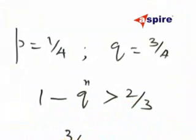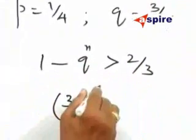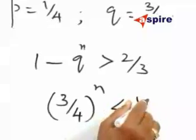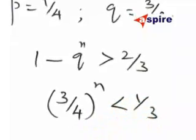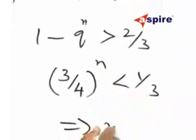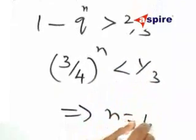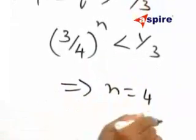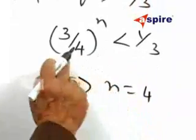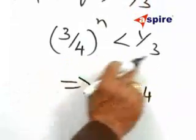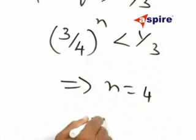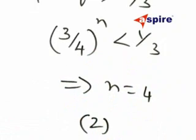That is, (3/4) to the power of n must be less than 1 by 3. That implies n is equal to 4, because n equal to 1, 2, or 3 does not satisfy this relationship. Therefore, n should be equal to 4. Our choice 2 is correct.